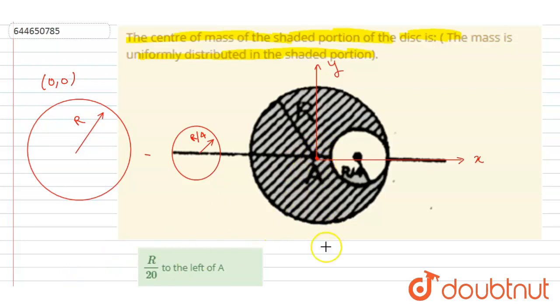And if you see this distance, the distance of this center of mass from this origin, let us say this is the origin. This lies at the origin. This is (0, 0).